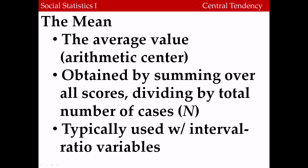The final measure of central tendency is something called the mean. The mean is the average value — that is, the arithmetic center of the distribution. It's obtained by summing all the scores of the variable and dividing that total by the total number of cases. This is typically only used with interval ratio variables because it involves arithmetic calculations.